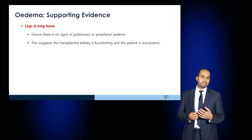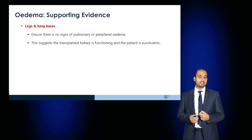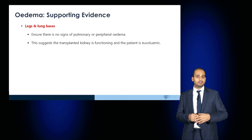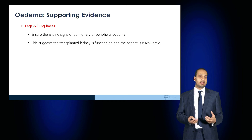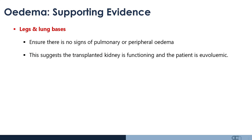The other thing to determine in a patient with a renal transplant is to ensure they're euvolemic. You should auscultate the lungs and examine the legs to make sure there are no signs of pulmonary or peripheral edema. If the patient is euvolemic with no edema, that suggests that the transplant kidney is functioning well.